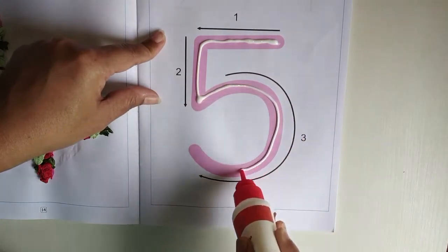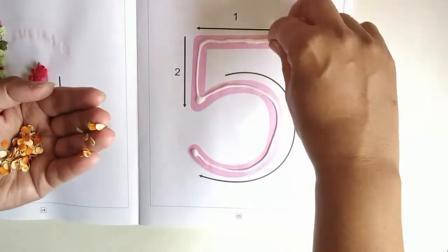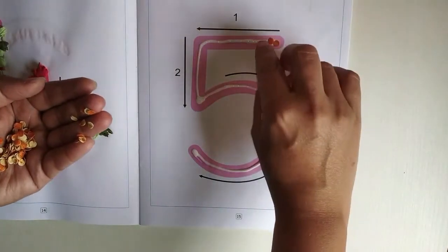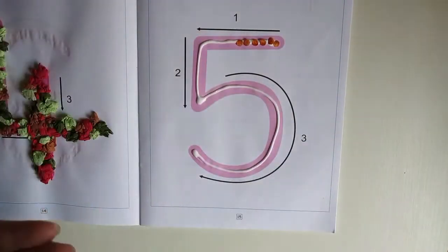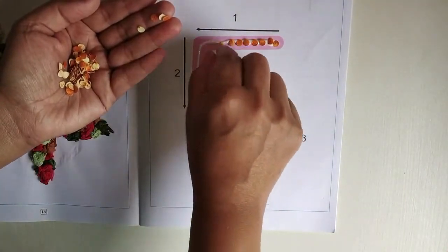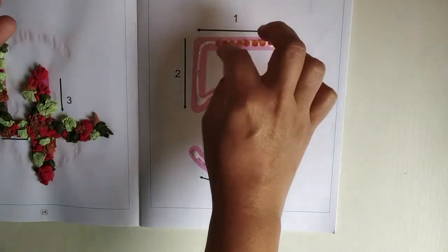For this activity, apply fevicol on number 5 and start placing one small circle in sequence. See that you place the circles in sequence children.